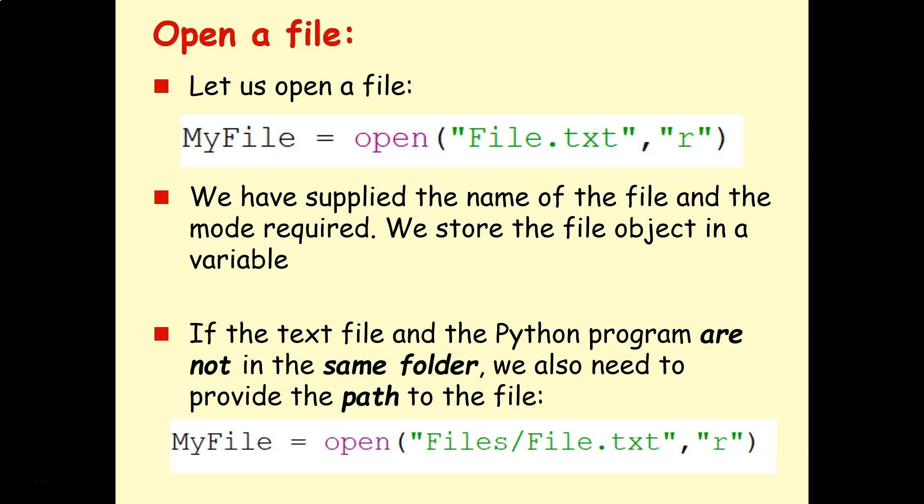So how do we open a text file? This is the first part of the code we need. The keyword that we require is open. So open, and then in your speech marks, you're going to have the full name of the file and the file extension, comma, and then we're going to open it in read mode, which is R. So R for read.